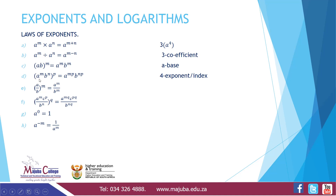The same principle applies here. A to the power M times B to the power N, all raised to P, equals A to the M times P and B raised to N times P. Also, A divided by B, all raised to M, equals A raised to M divided by B raised to M. And raised to Q gives A to M times Q, and C to P times Q, divided by B to N times Q.